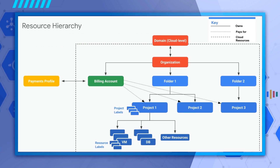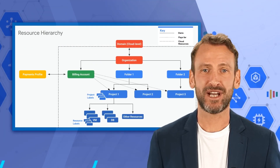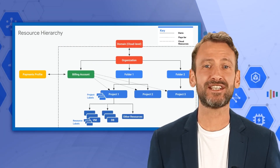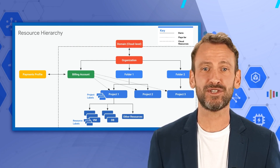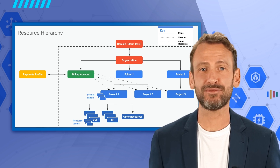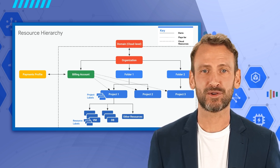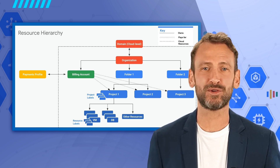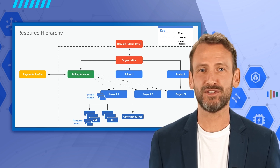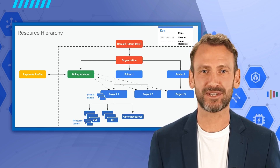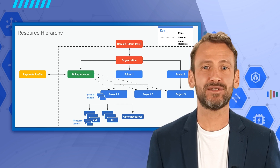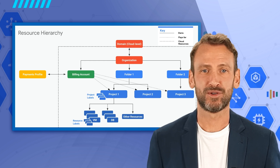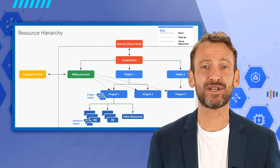The following diagram shows an example resource hierarchy illustrating the core account-level resources involved in administering your Google Cloud account. Your company domain is the primary identity of your organization and establishes your company's identity with Google services, including Google Cloud. An organization is the root node of the Google Cloud hierarchy of resources. All Google Cloud resources that belong to an organization are grouped under the organization node, allowing you to define settings, permissions, and policies for all projects, folders, resources, and cloud billing accounts.